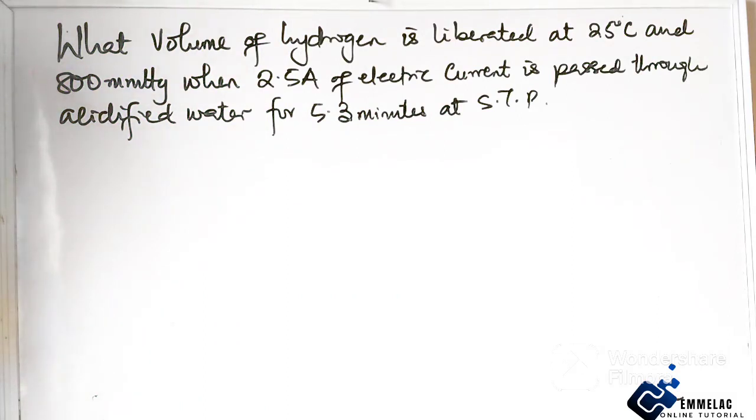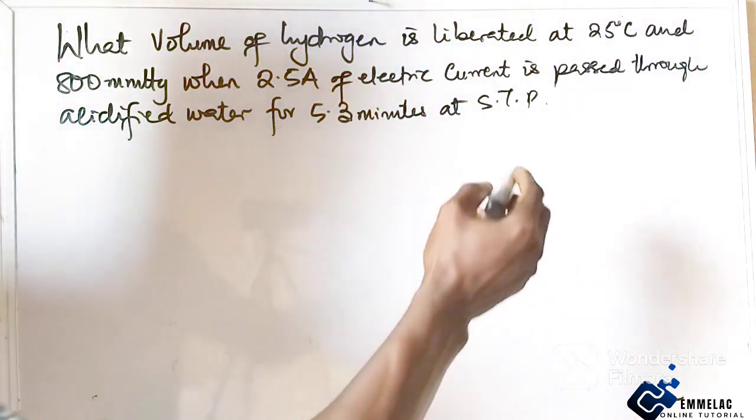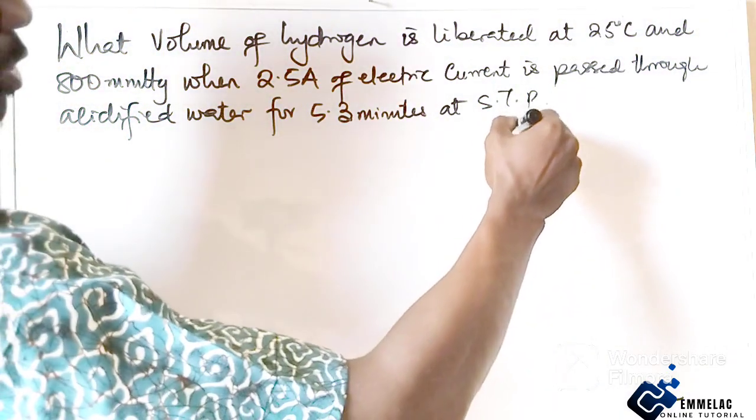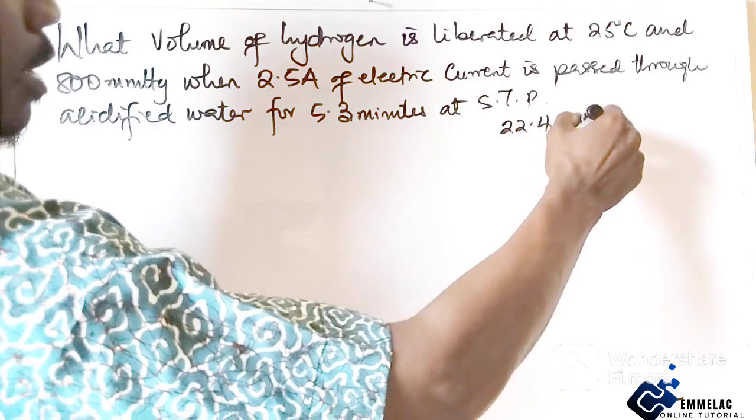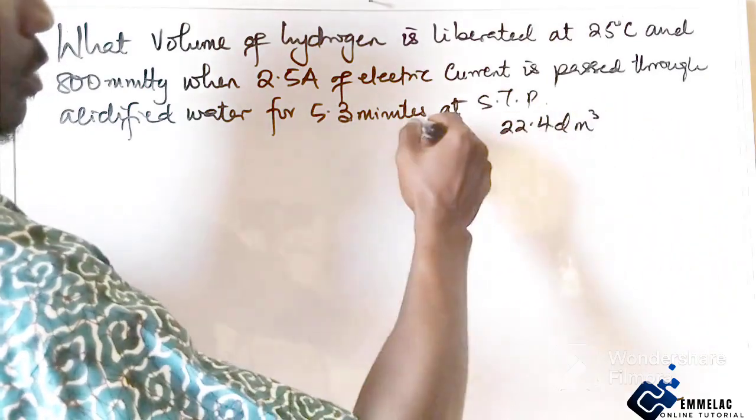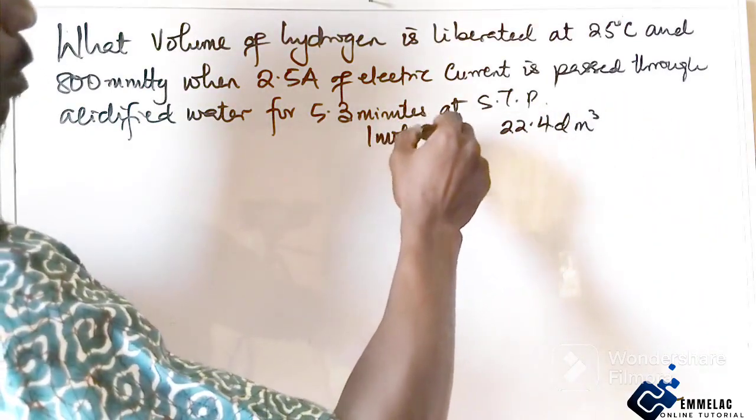Now with this, let us recall that one molar volume of gas at STP is giving us 22.4 decimeter cube. So one molar volume of gas gives us this.